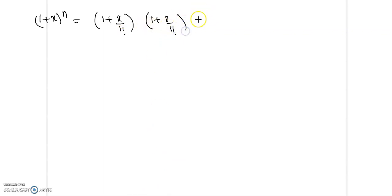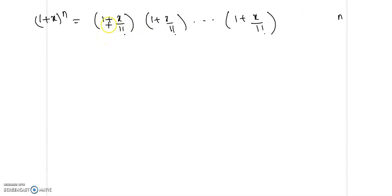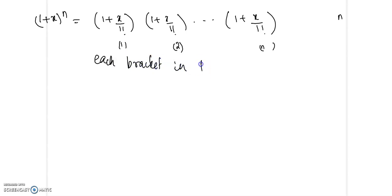So (1+x) can be put in the form (1 + x/1!), repeated n times. You are given n objects and you have to arrange r objects at a time. Object 1 may or may not be in the arrangement. If it is not in the arrangement it corresponds to 1; if it occurs in the arrangement it is counted in the term x/1!. Similarly, the second object and the nth object may or may not occur. So each bracket in the RHS corresponds to a distinct object in the arrangement.